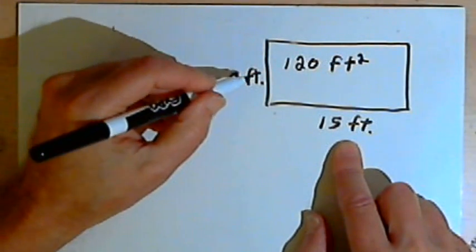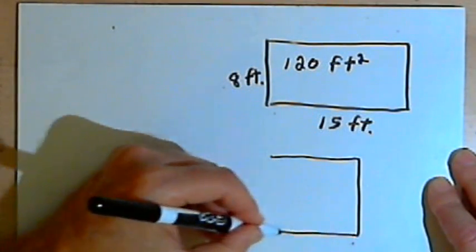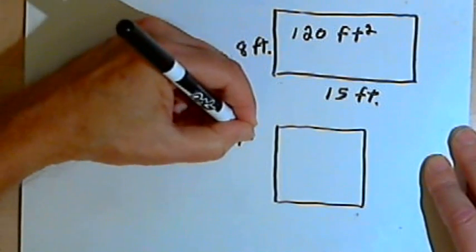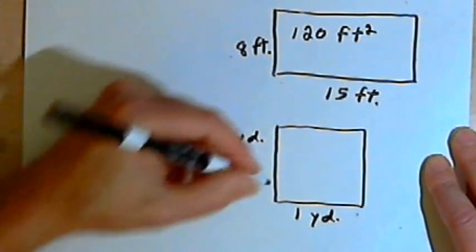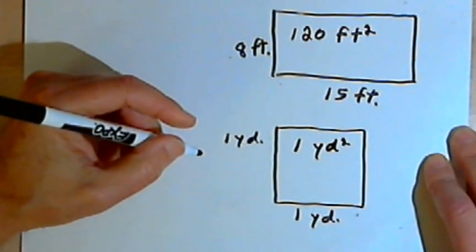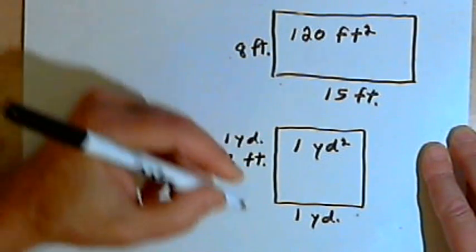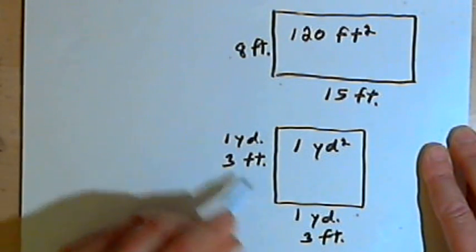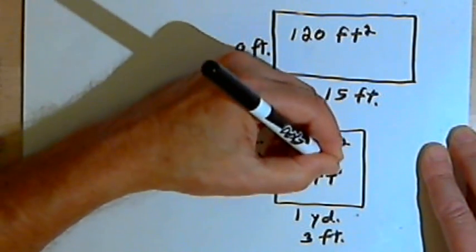Now I want to find the relationship between square feet and square yards. I'll think of a square that is 1 yard by 1 yard. I know its area is 1 square yard. I also know that 1 yard is the same as 3 feet, so its dimensions are 3 feet by 3 feet. If I multiply those two dimensions, I'll get 9 square feet.